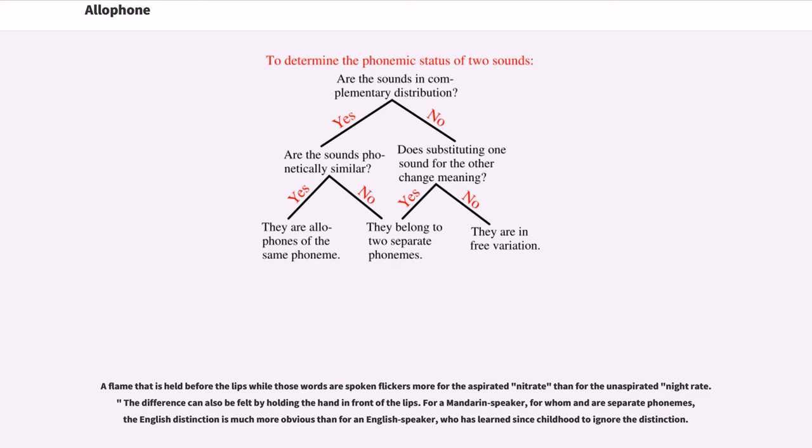For a Mandarin speaker, for whom t and tʰ are separate phonemes, the English distinction is much more obvious than for an English speaker, who has learned since childhood to ignore the distinction.